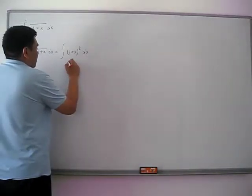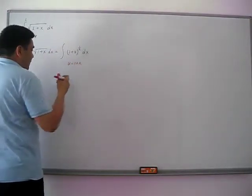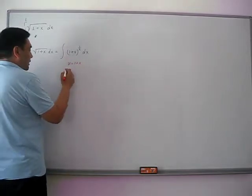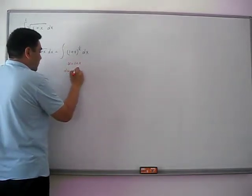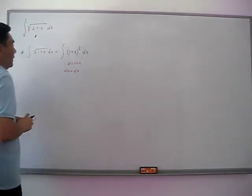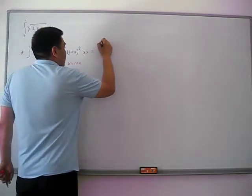So, u is 1 plus x. Then, if we differentiate both sides with respect to x, that will be du equals dx. Then next, let's do the u-substitution here.